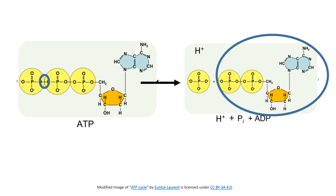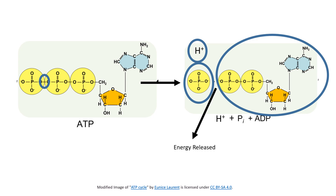ADP is now made up of adenosine and two phosphate groups. The third phosphate group has been split off and is now referred to as inorganic phosphate. Additionally, what is created in this reaction is a hydrogen ion. What's most important about breaking ATP down into ADP is that breaking the high-energy bond releases energy into the cell.